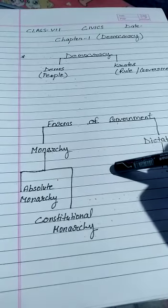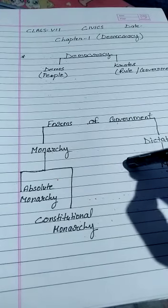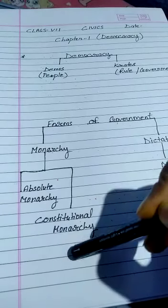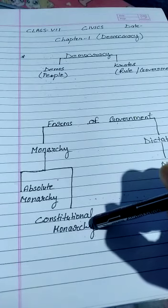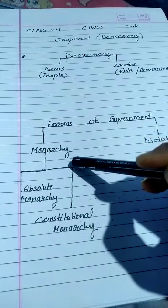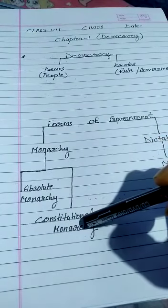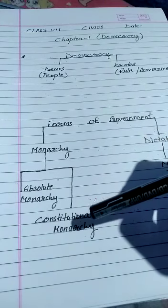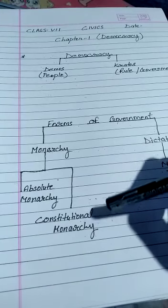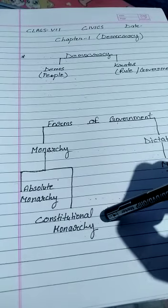Whatever he says, that is the rule only. He or she, whoever is the ruler, is not restricted by any constitution or any kind of laws. In constitutional monarchy, the powers of the monarch are defined and limited by law. The king or queen are just the nominal head, and the administration is carried on by the prime minister and the cabinet.